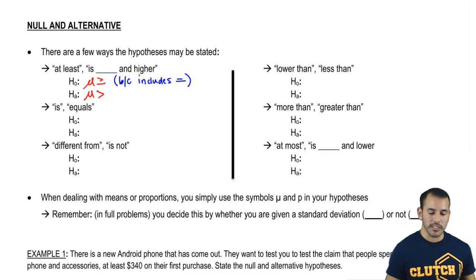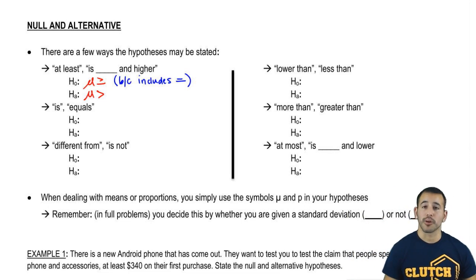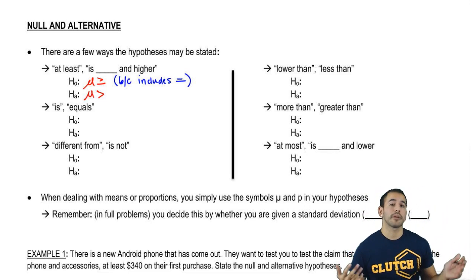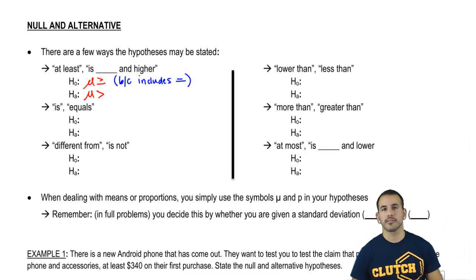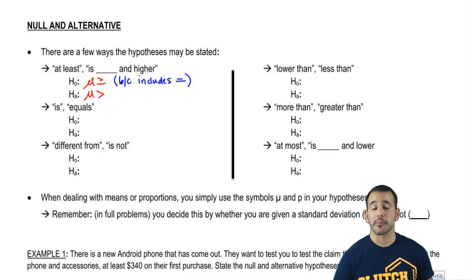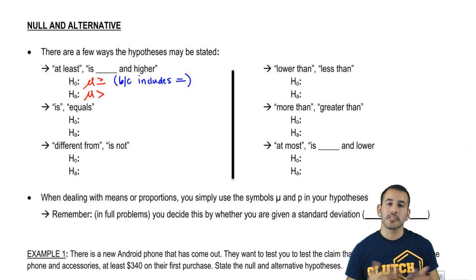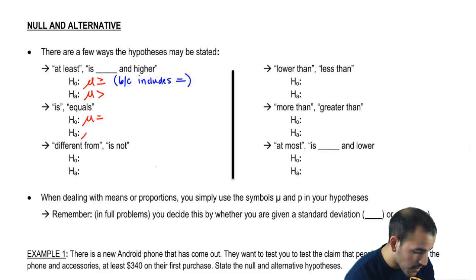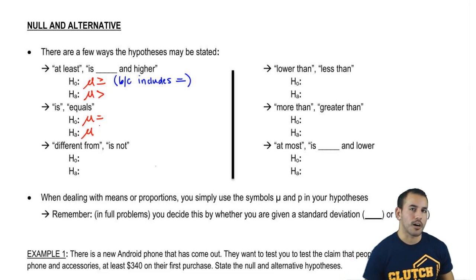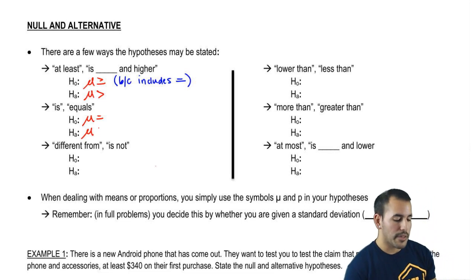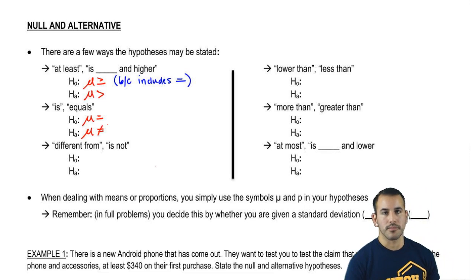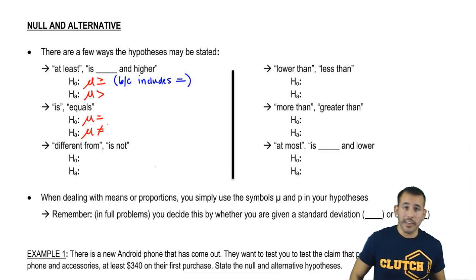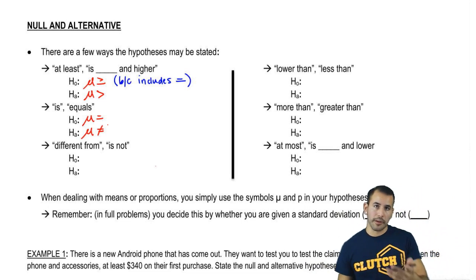So 'is' or 'is equal to' — for example, people are weighing 100 pounds, or the average weight of Americans equals 100 pounds. If there's a claim like that, equals falls on the null, and then the alternate is going to be the exact opposite. So in this case it's going to be 'not equal to,' because not equal to is kind of taking into account if it's really big or really less than what we expected it to be.